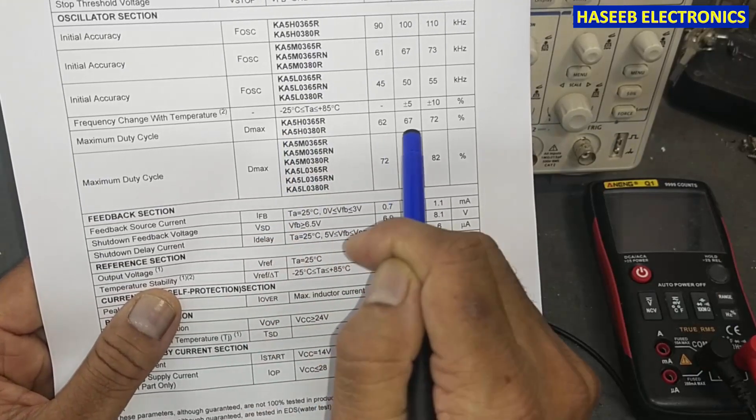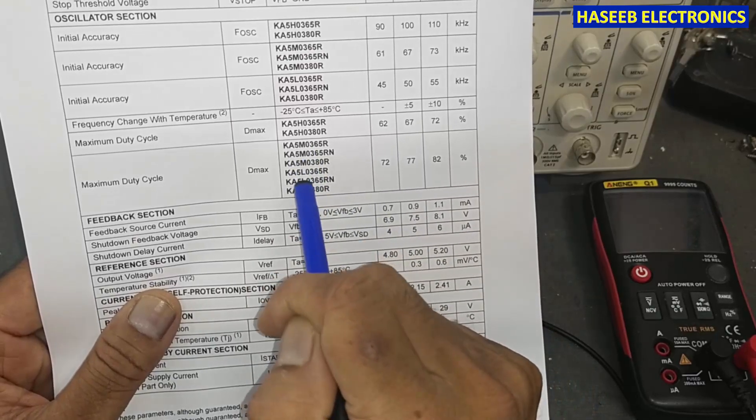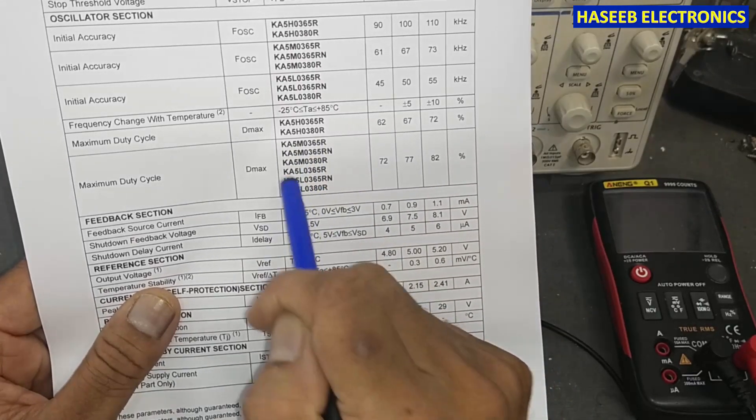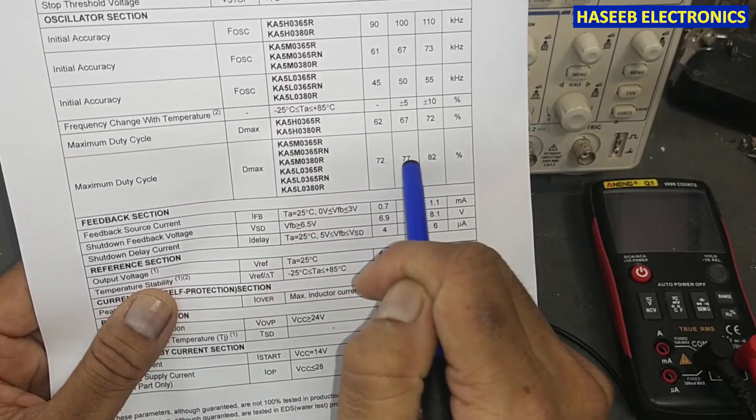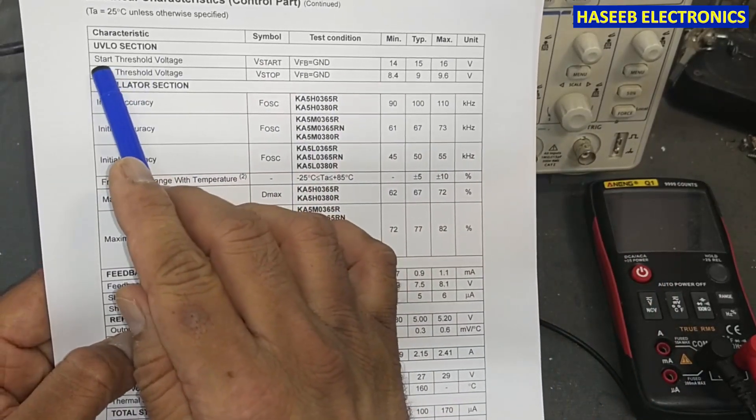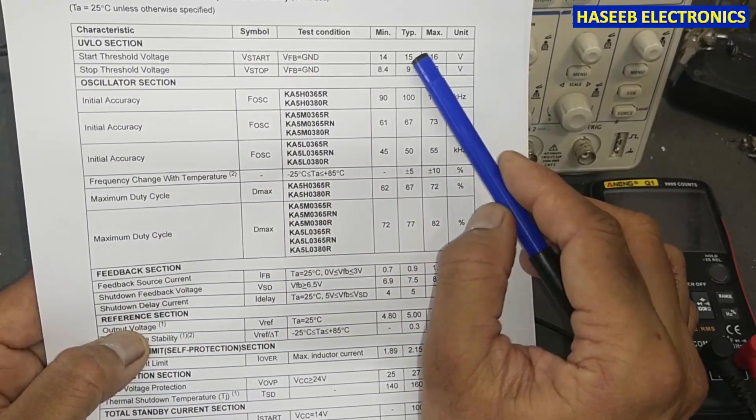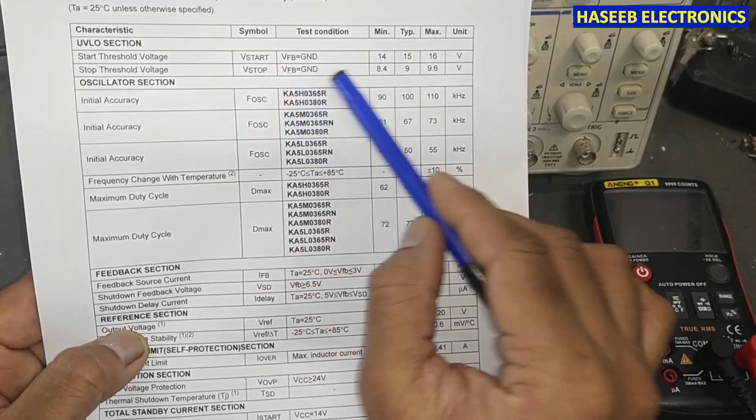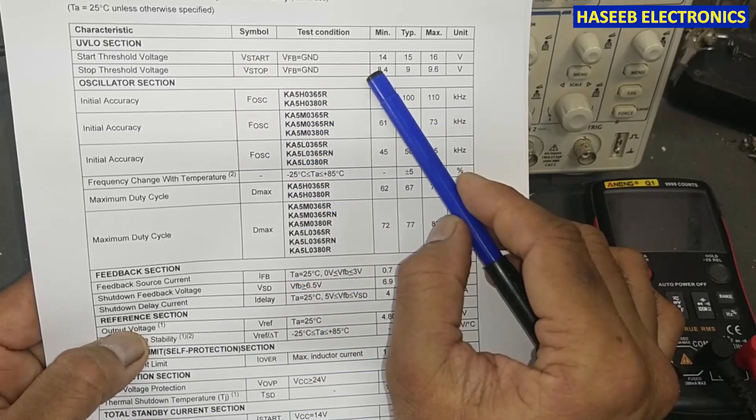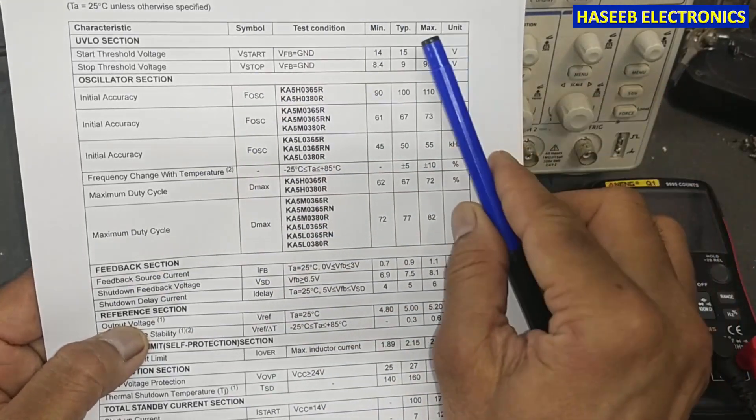And L, either it is L0365R, 365RN, or 380RN, is 50 kilohertz. Duty cycle for H series maximum 67 percent, M and L both versions 77 percent maximum. Working voltage: start threshold voltage, startup 15 volt and stop 9 volt, 8.4 volt. This is the lower level, upper level 15 to 16 volt maximum.